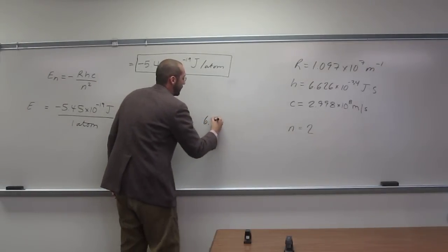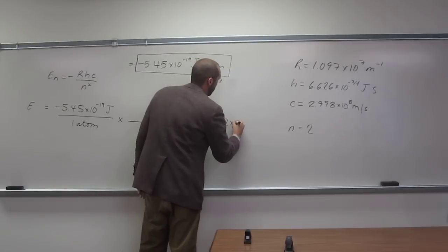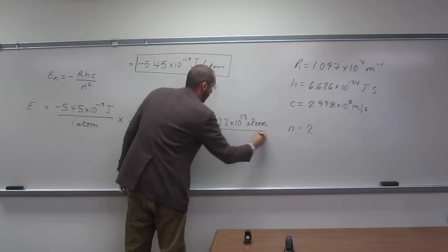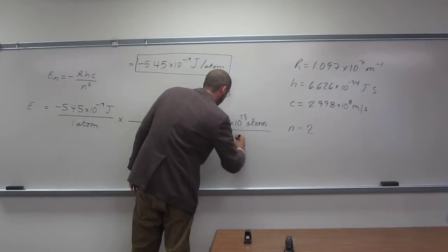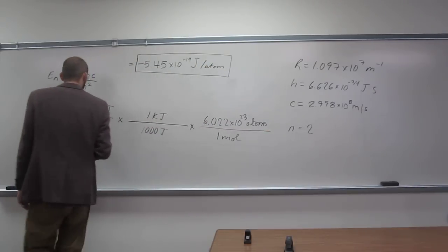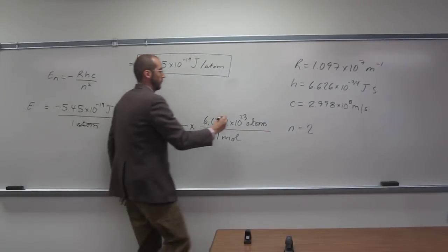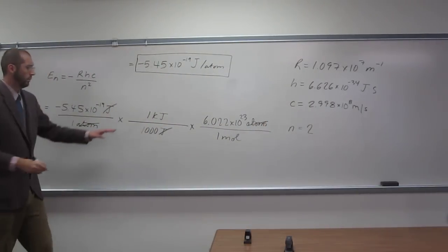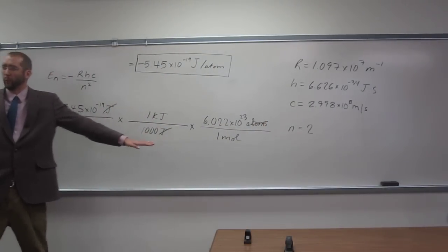And 6.022 times 10 to the 23rd atoms per mole, that'll give us kilojoules per mole.